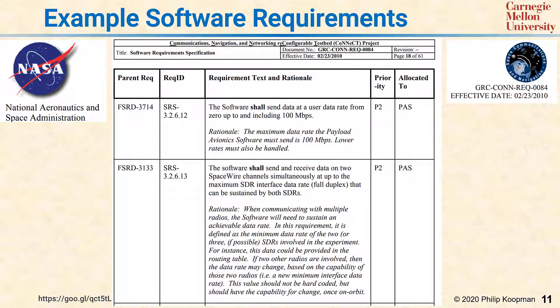Here are some example requirements from a NASA requirements document. Going across the columns from left to right, we can see there's a parent requirement, which is going to be a product requirement. And that product requirement results in one or more software requirements — the Req ID.